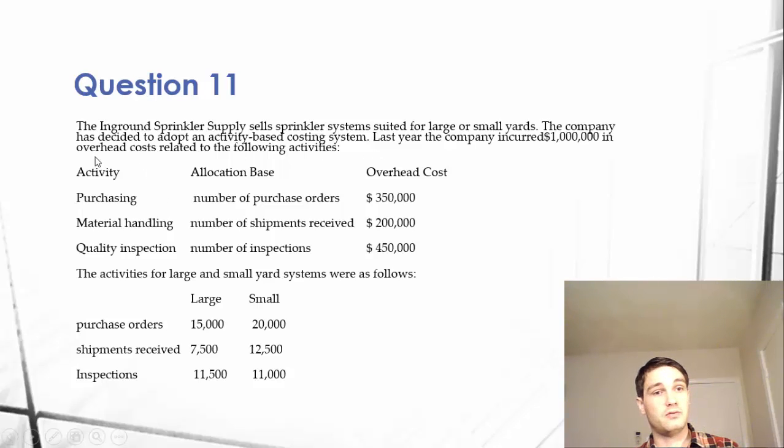What this company does is for an activity like purchasing, their purchasing department looks at the number of purchase orders they've received and allocates $350,000 toward the purchasing department. Then to look at specific items, they take the purchase orders, add these up—we're not doing large or small separately.